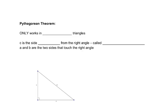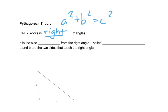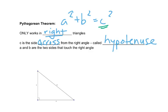The Pythagorean theorem — this is a theorem a lot of people remember but don't always remember how to use correctly. The Pythagorean theorem is A squared plus B squared equals C squared. The first important thing to remember is that this only works if you have a right triangle. C is the side that is across from the right angle — it's called the hypotenuse. C has to be the side across from the right angle. A and B are the two sides that touch the right angle.